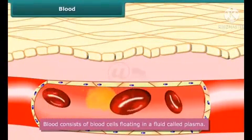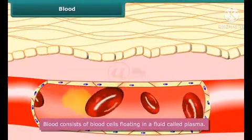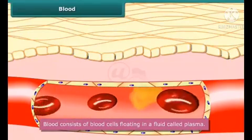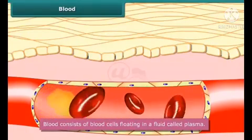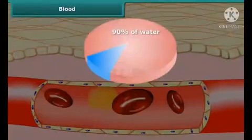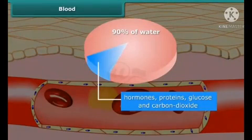Blood consists of blood cells floating in a fluid called plasma. Plasma is yellow in color and 90% of it is water. Besides water, plasma contains hormones, proteins, glucose and carbon dioxide.